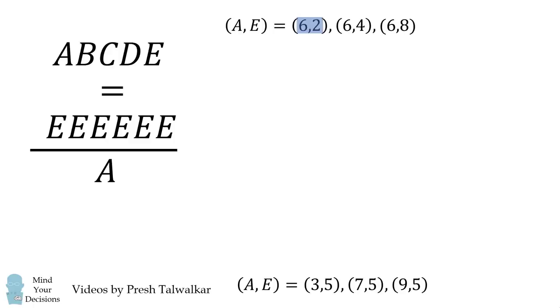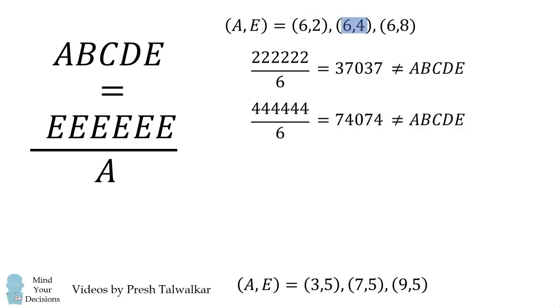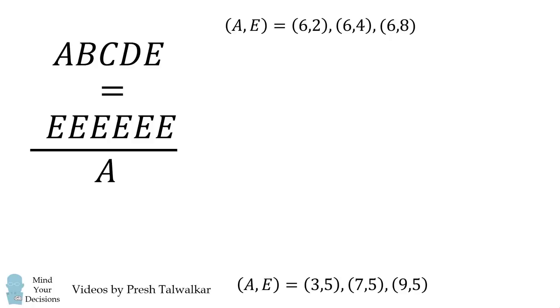Here suppose E is equal to 2 and A is equal to 6. We can then work out the following long division problem and we'll see which five-digit number results. We get the following number and the thing is it's not equal to ABCDE because we need each digit to be different. We can then work through the other possibilities in a similar fashion. We can see that none of these possibilities will work. Therefore, none of these cases will result in a solution to this problem. So we eliminate all of these cases.